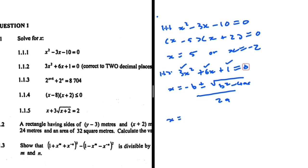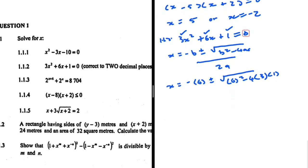So x equals minus 6 plus or minus the square root of b squared — that is 6 squared — minus 4ac, where a is 3 and c is 1, and we divide all of that by 2a, which is 2 multiplied by 3.